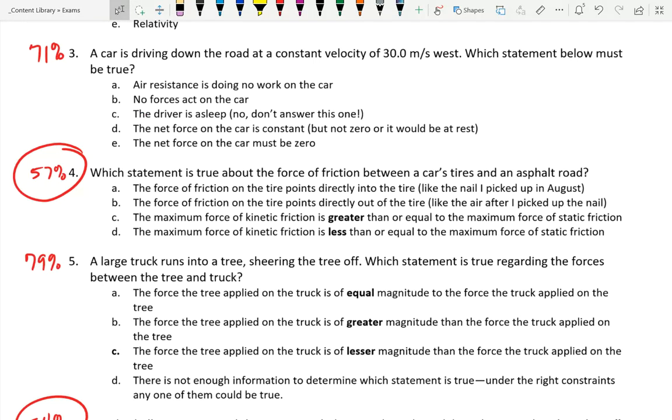Number three was a direct question from the worksheet. If you have constant velocity, 30 meters per second, that means acceleration is zero, which by Newton's second law means the net force must be zero. So air resistance is probably doing work on the car unless you're in a vacuum, and the engine is working to push on the ground to counter that. If the net force was constant and not zero, the car would be accelerating, which could mean speeding up or turning.